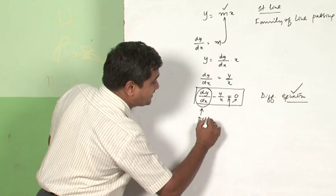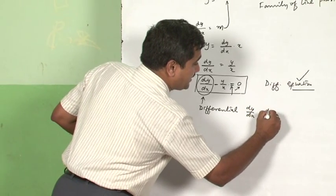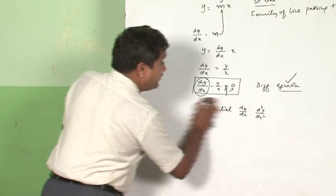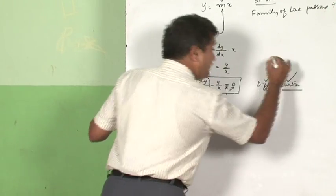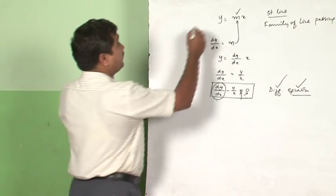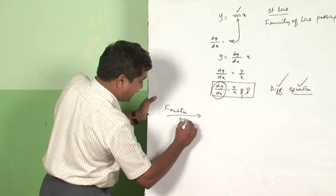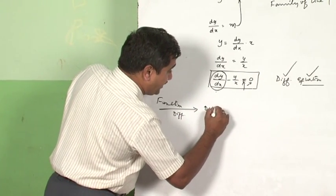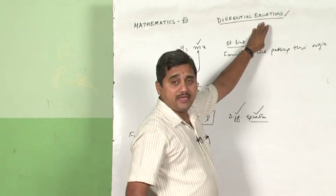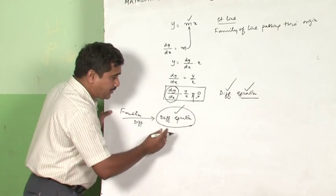Derivatives are also called differentials. dy/dx is the first differential; d²y/dx² is the second differential. So this is an equation having different derivatives — that is, differentials — and therefore it is called a differential equation. Whenever a function is put through the process of differentiation, differentiation gives you a differential equation.